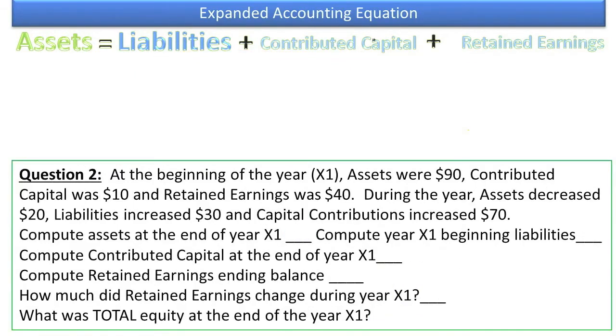Question 2. Once again, you've been given information from the expanded accounting equation, beginning and ending, and you'll be asked to solve for the unknowns. At the beginning of the year X1, as you know, I like to put up a beginning row, an ending row, and a change row. So at the beginning of the year, assets were $90, contributed capital was $10, and retained earnings was $40. The unknown for that row is liabilities.